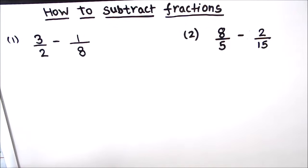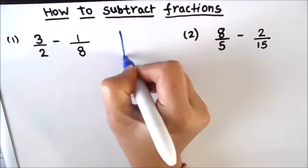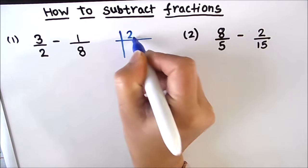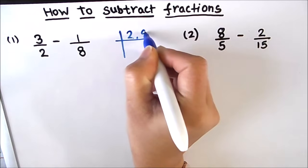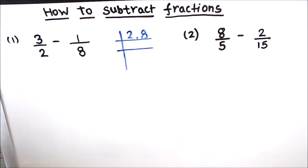The first step for subtracting fractions is to find the common denominator of the two fractions. As we do in addition of fractions, the same method we do in subtraction of fractions to find the common denominator. So we have two denominators, 2 and 8, and we are going to use the prime factorization method to find the common multiple or common denominator.